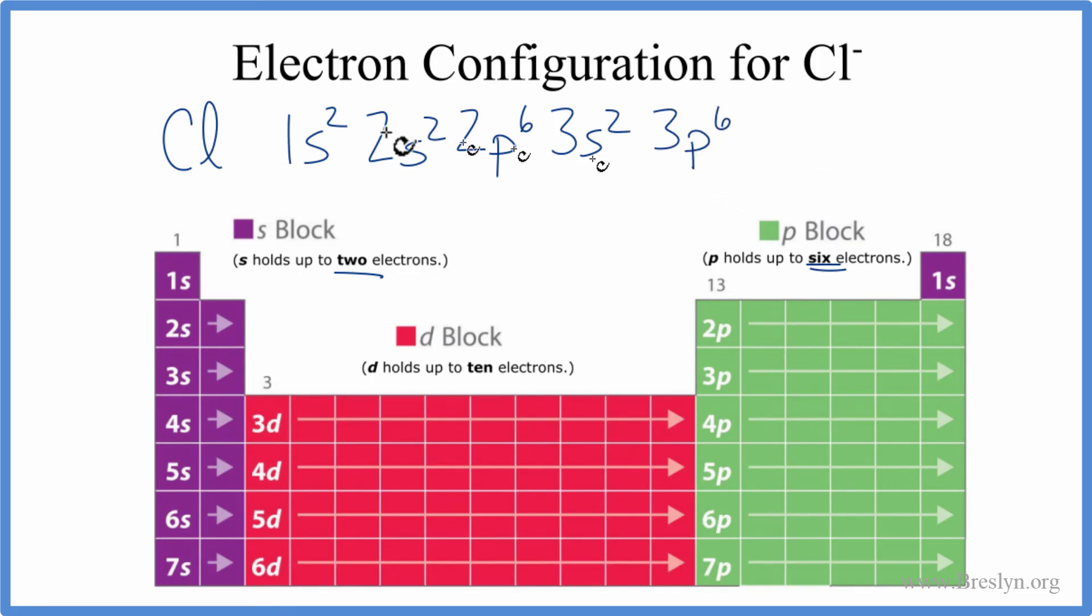And this is the electron configuration for Cl minus, the chloride ion. You should note that the highest energy level, the threes here, those have eight electrons. These are the valence electrons.